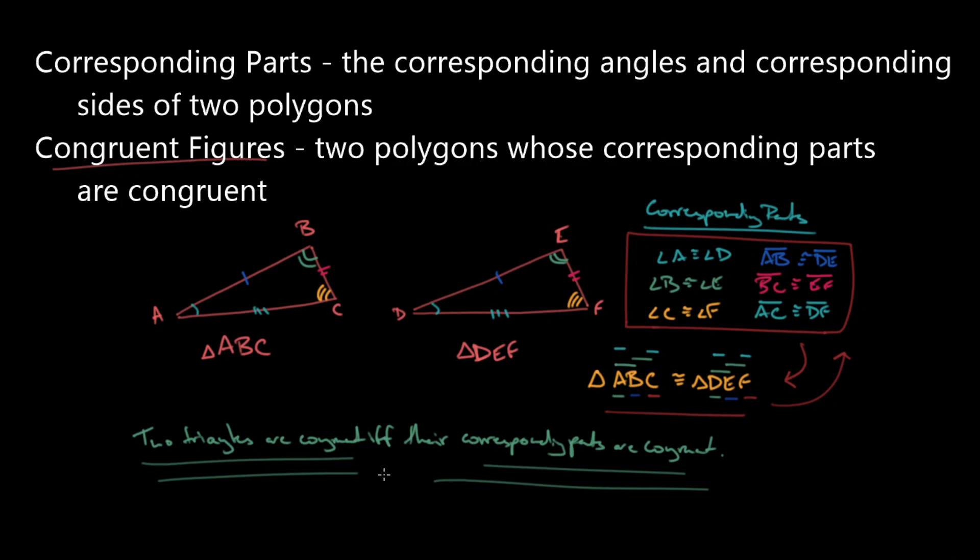However, we're just going to work with triangles right now. When I go to write a proof, I will need to show all six of these things before I can say the triangles are congruent to each other. Moving forward, we'll use this definition of congruent triangles to justify that two triangles are congruent before we learn some quicker ways of doing that.